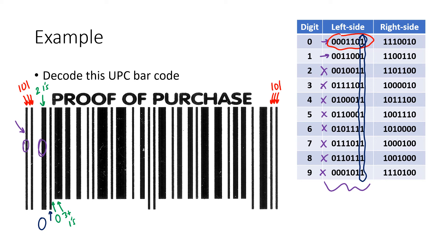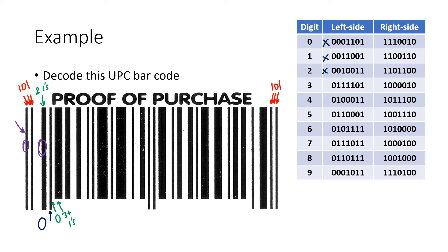We're looking for a digit on the left side that starts with a single zero and then has three or more ones. Looking at the chart, it could be three or seven. After that, we've got another single space and then multiple ones — it looks like a double-wide bar after that single space. So we have: single zero, bunch of ones, single zero, then two ones. It's not three, because three only has a single one after that second space. So it has to be a seven. My second digit is seven.